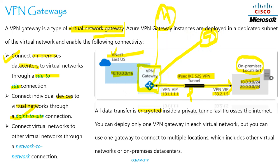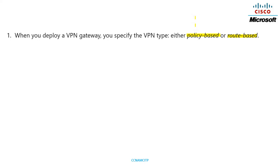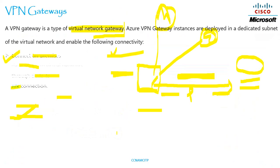When you deploy a VPN gateway, you specify the VPN type — either policy-based or route-based — so you have to select one of these two. These are the two types of VPN: one is policy-based and the next one is route-based VPN. That is what is mentioned here when you deploy a VPN gateway.